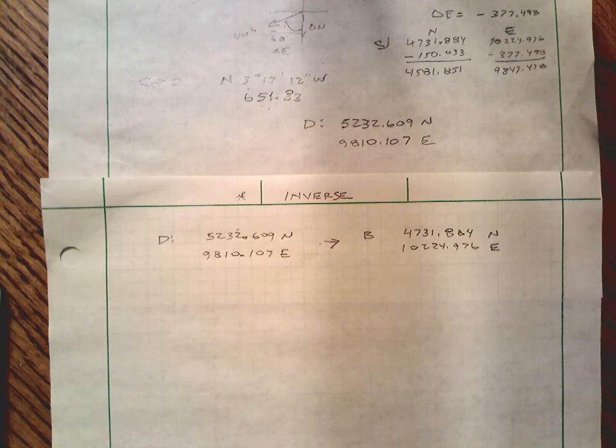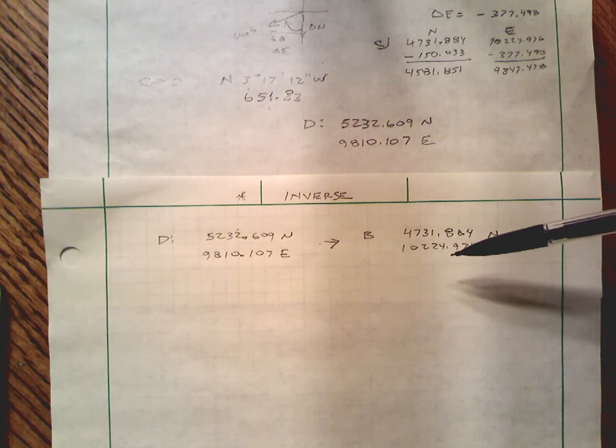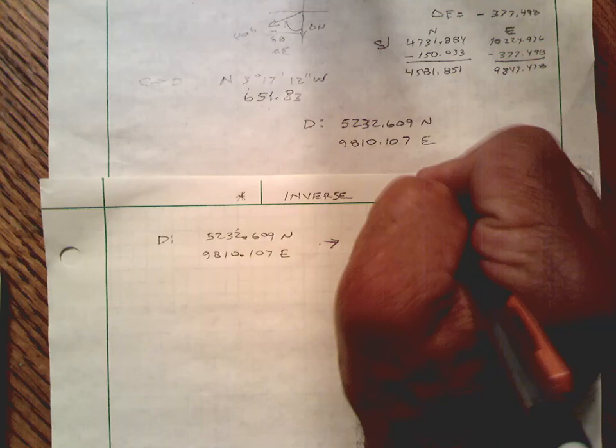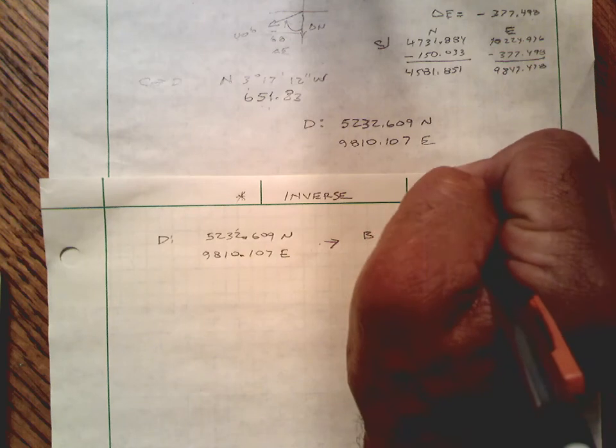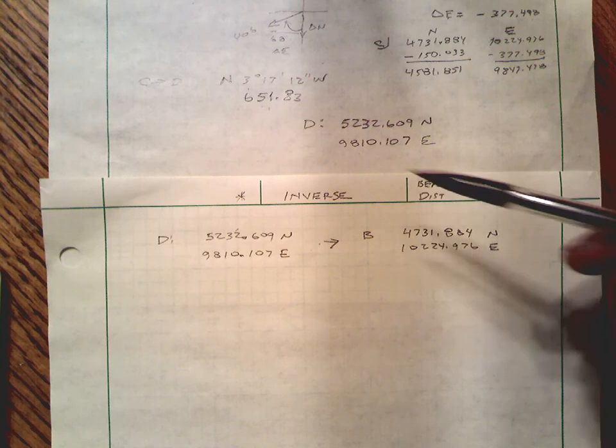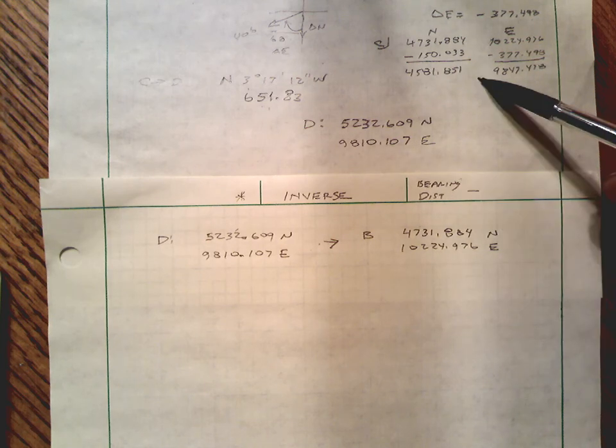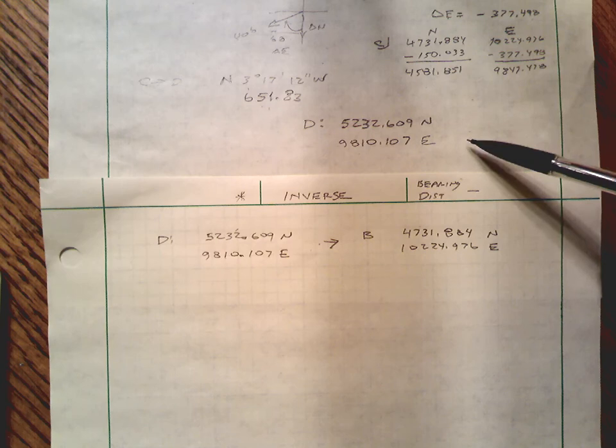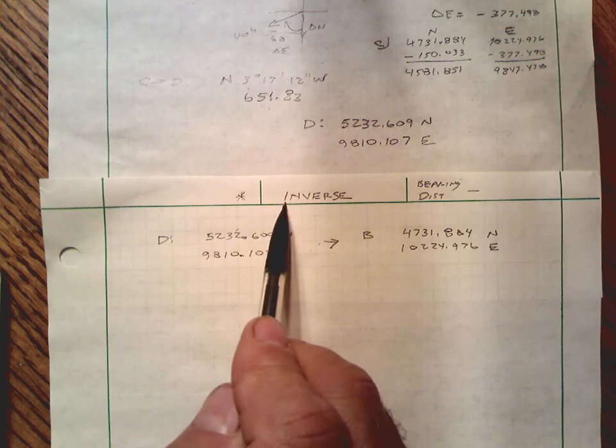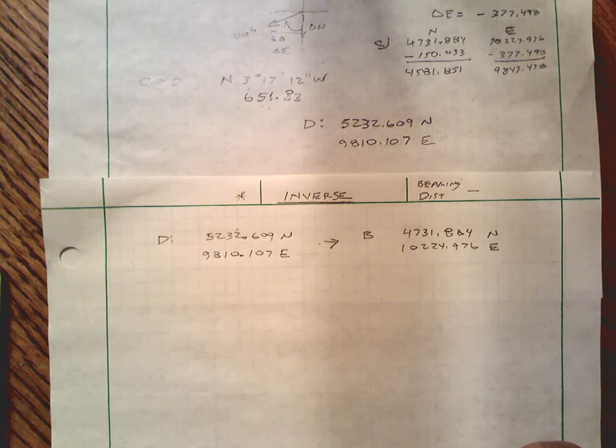You'll be given the two coordinates of actually two points, and your job is to find the bearing and the distance between them. So here we're given the coordinates and we're finding the bearing and distance. In this case we were given the bearing and distance and were finding the coordinates, but this is a much more practical, useful task to be able to do, particularly longhand on a job site.